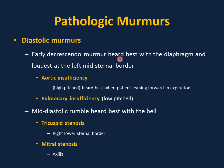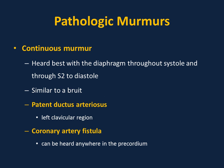Diastolic murmur: early decrescendo murmur best heard with the diaphragm, loudest at the left mid-sternal border. Aortic insufficiency produces a high-pitched sound best heard with the patient leaning forward in expiration. Pulmonary insufficiency produces a low-pitched early decrescendo murmur. Mid-diastolic rumbling murmur: tricuspid stenosis is best heard at the right lower sternal border. Mitral stenosis produces a mid-diastolic rumble heard at the axilla. Continuous murmur is heard throughout systole and diastole, similar to a bruit. Classic example is patent ductus arteriosus (PDA), best heard at the left clavicular region. Coronary artery fistula can produce a continuous murmur anywhere in the precordium.